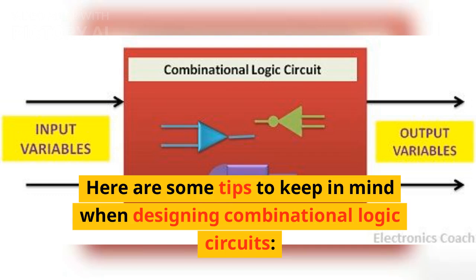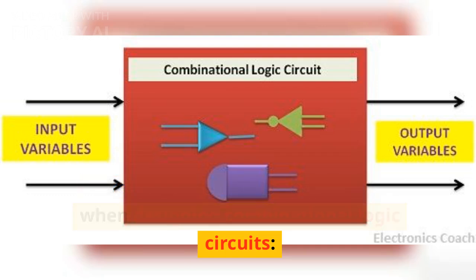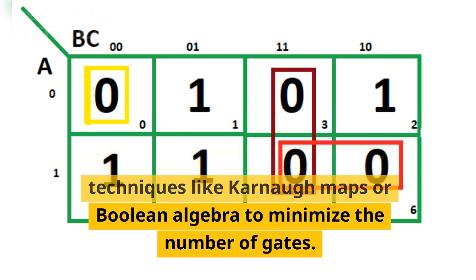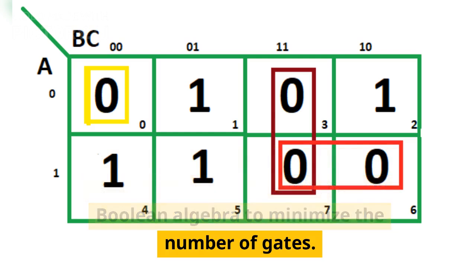Here are some tips to keep in mind when designing combinational logic circuits. Simplify Boolean expressions: use techniques like Karnaugh maps or Boolean algebra to minimize the number of gates.